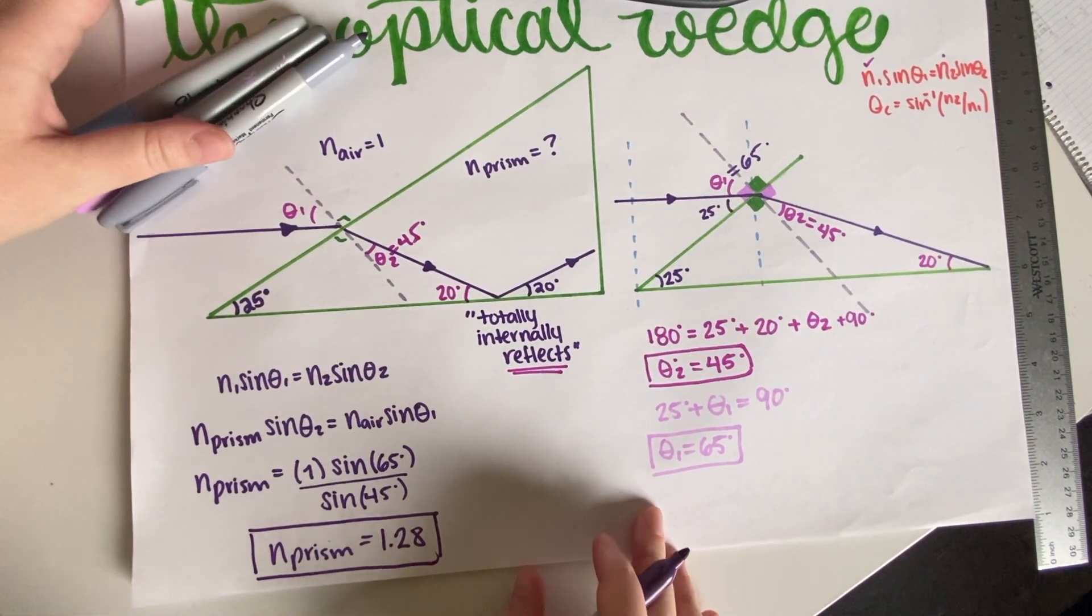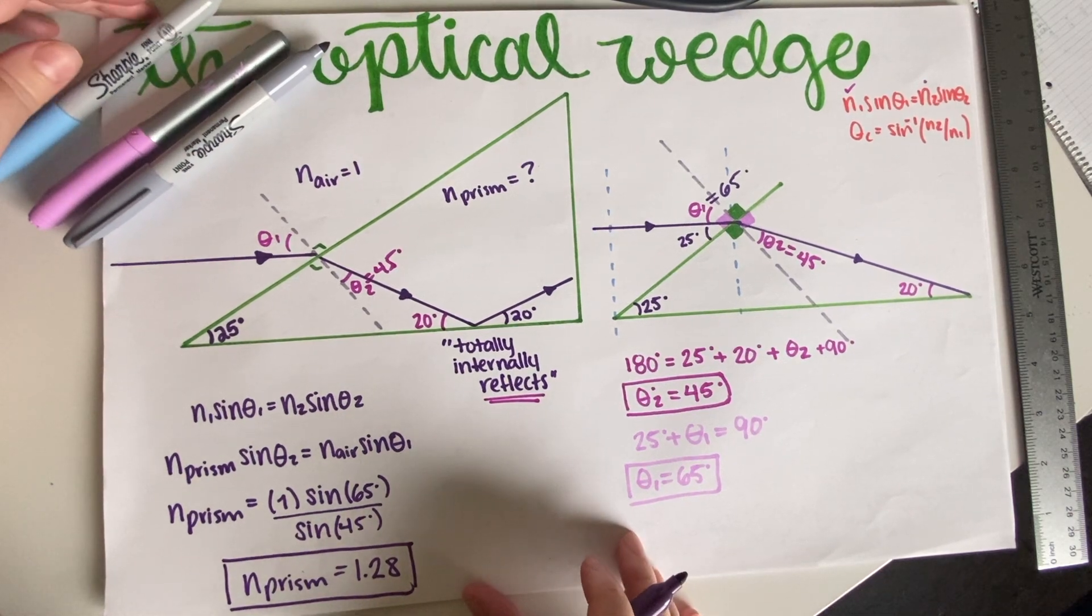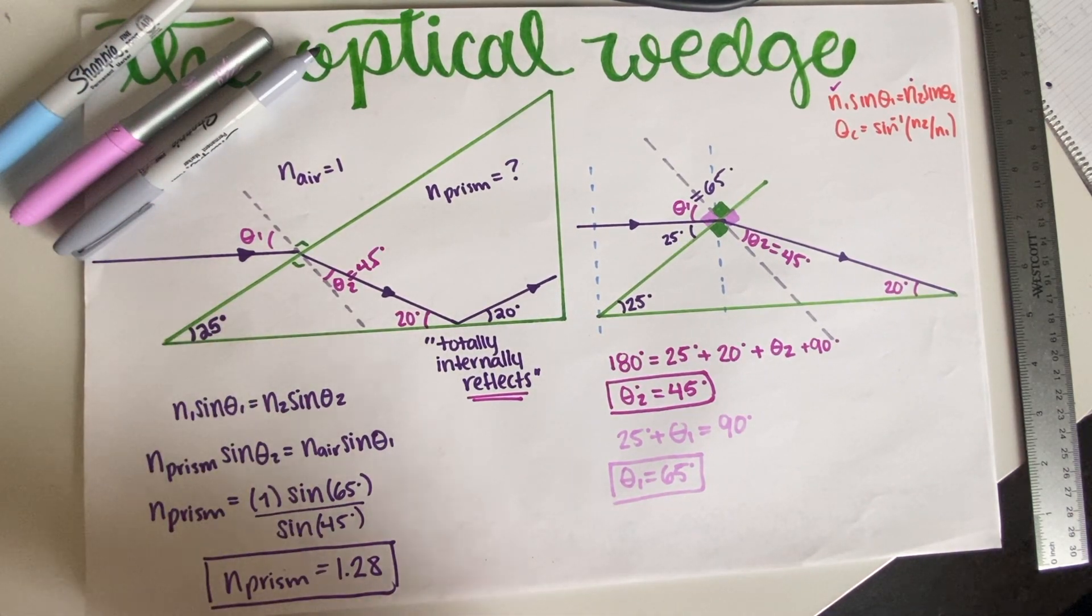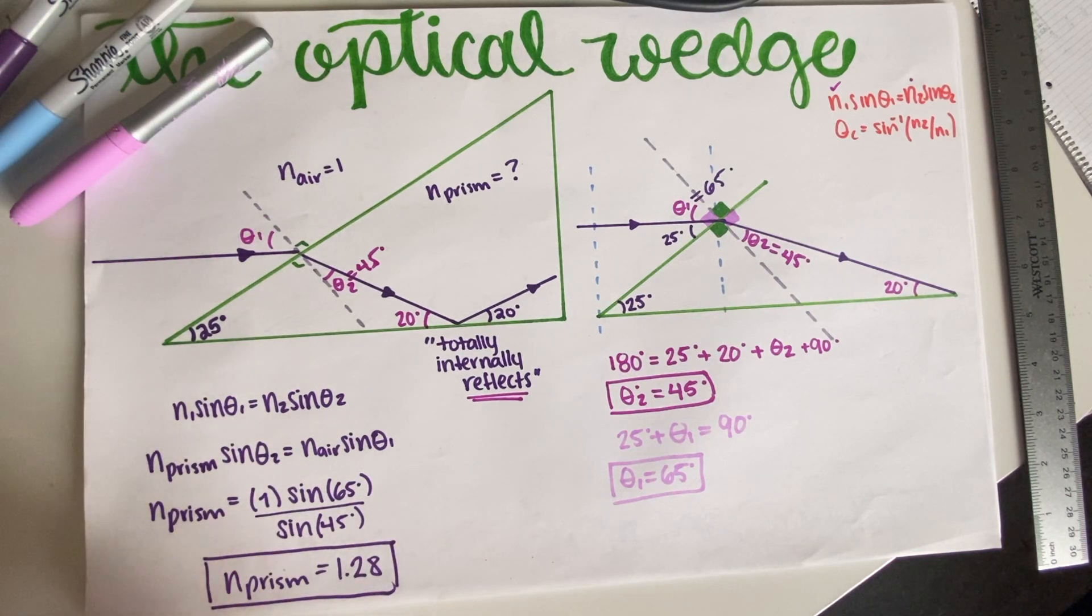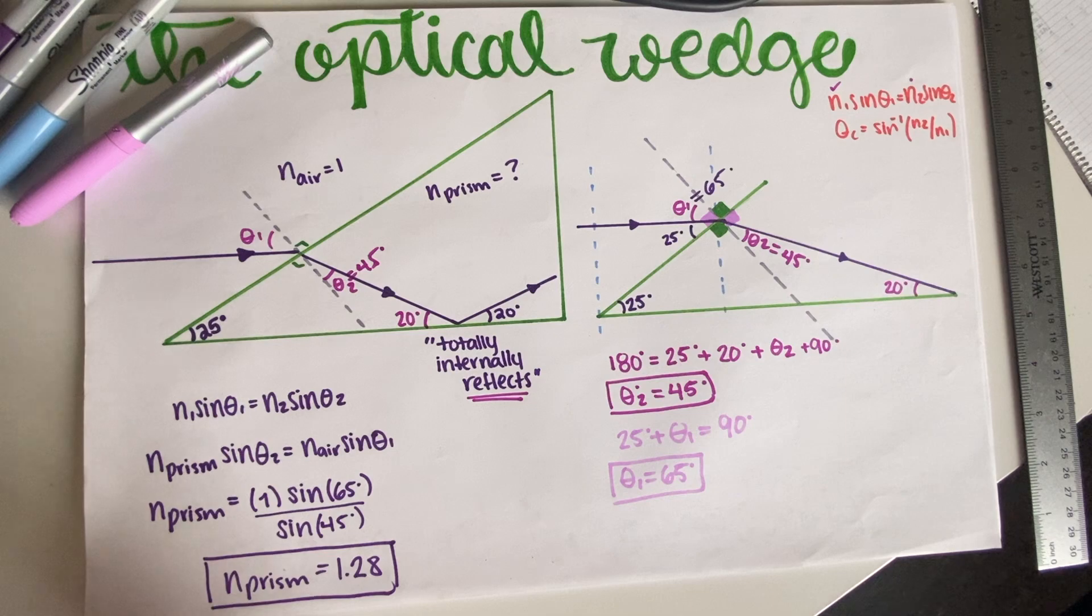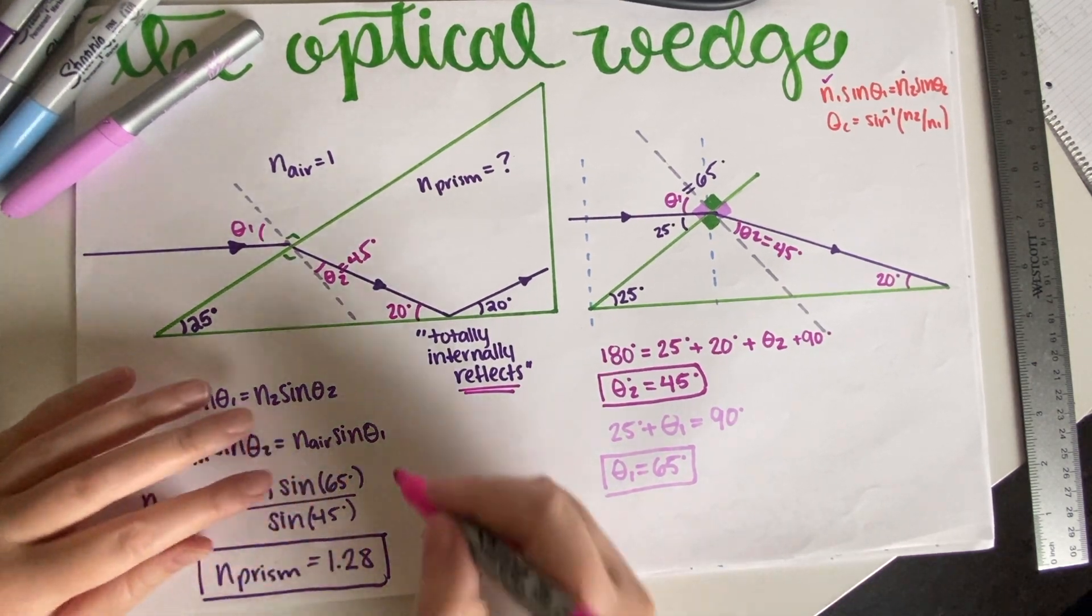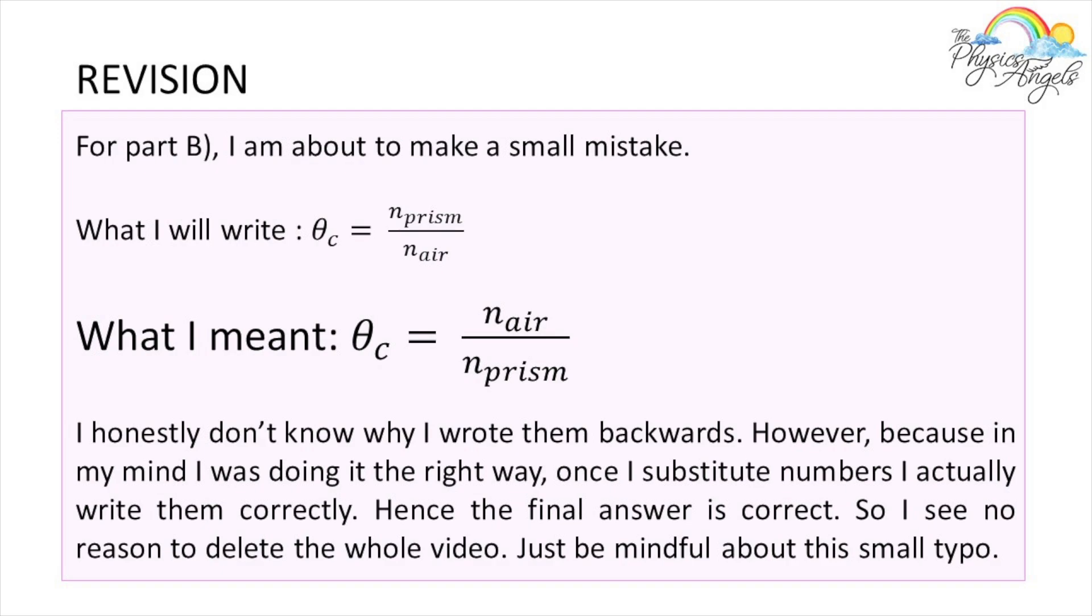So this is a little bit of a trigonometric problem. Once you figure out your angles, then you're good to go. I mean, we only get one equation, Snell's law equation, so that's it. Now, part B is asking what is the critical angle for boundaries between air and the material comprising the prism?